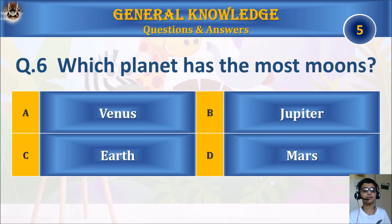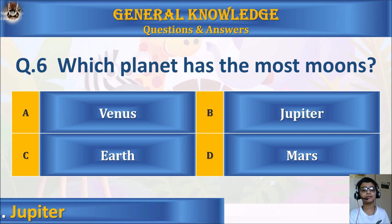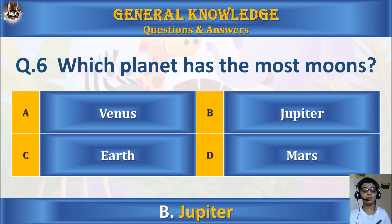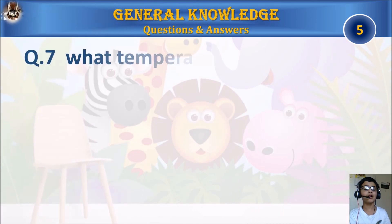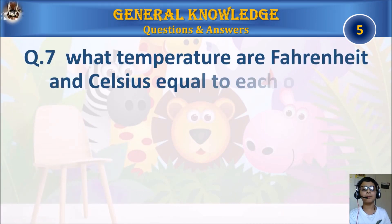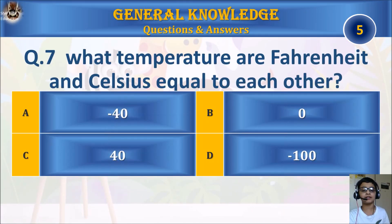Question 6: Which planet has the most moons? A: Venus, B: Jupiter, C: Earth, or D: Mars. Your time starts. The answer is B: Jupiter.